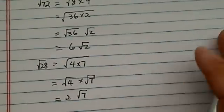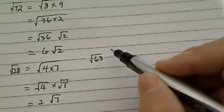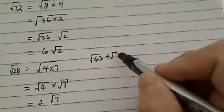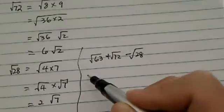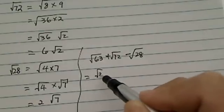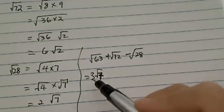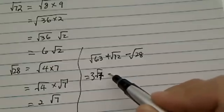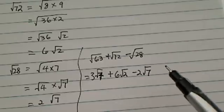So now go back to where you originally have. That was radical 63 plus radical 72 minus radical 28, so let's plug it all in. Radical 63 is 3 radical 7, next one is 6 radical 2, and then there's 2 radical 7.